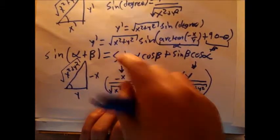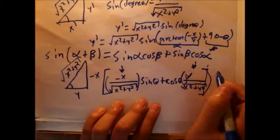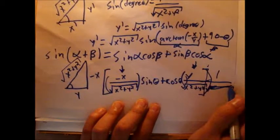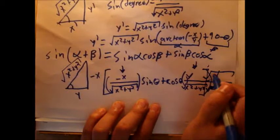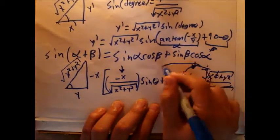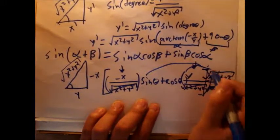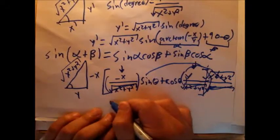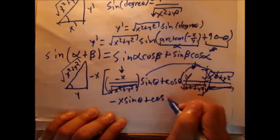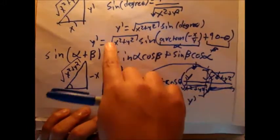Remember, this was multiplied by the hypotenuse, which is the square root of x squared plus y squared. This distributes along, and since x squared plus y squared matches the denominator, they cancel out. You're left with a surprisingly clean result: negative x sine theta plus y cosine theta equals y prime.